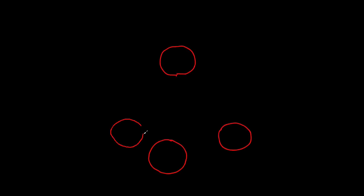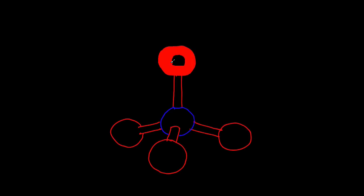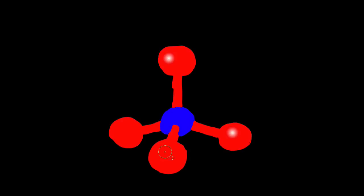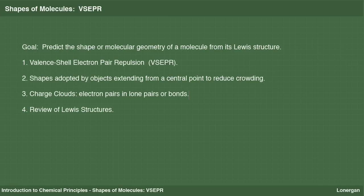The shape of a molecule determines many of its physical and chemical properties. By designing molecules of particular shapes, chemists can design molecules that are useful for a wide range of applications, ranging from diagnosing and treating disease to monitoring and cleaning up pollution. The overall goal of this presentation is to learn how to predict the shape or molecular geometry of a molecule from its Lewis structure.